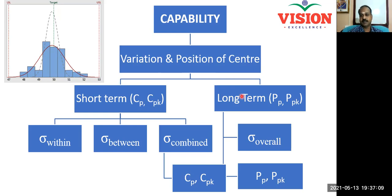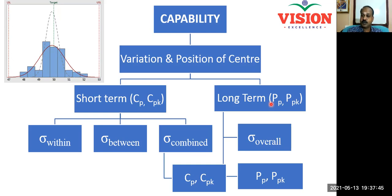To conduct a capability study, I collect data over a longer period of time — sufficiently large data. The reason for collecting data over a longer period is that in the long-term, all possible variation will happen. So data collected over the long-term will capture both long-term variation as well as short-term variation. Over the long-term, the batch-to-batch variation will be high.